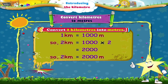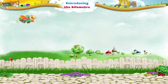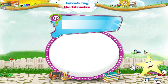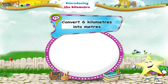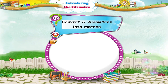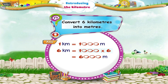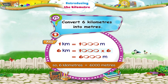Let us solve another example: six kilometres. Six kilometres equals one thousand into six, which is six thousand. So six kilometres equals six thousand metres.